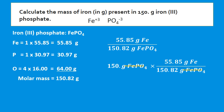So: 150 × 55.85 ÷ 150.82. Thinking logically, 150 divided by 150.82 is approximately 1, multiplied by 55.85, so you'd expect the answer to be about 55.85. But since 150 is slightly less than 150.82, the answer will be slightly less than 55.85. In this case, we get 55.5 grams of iron.